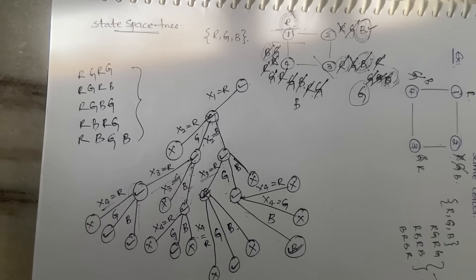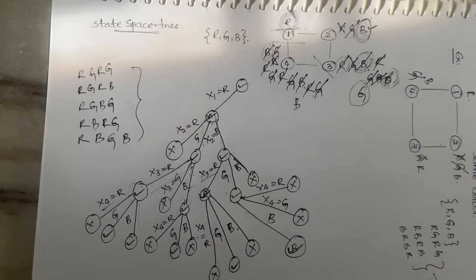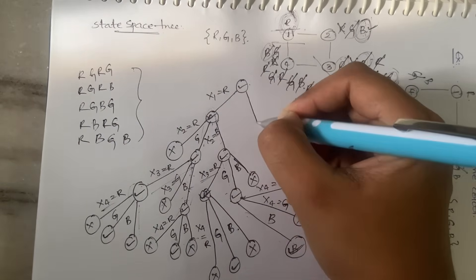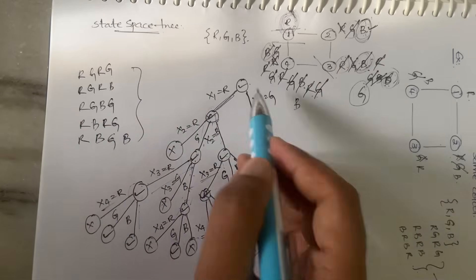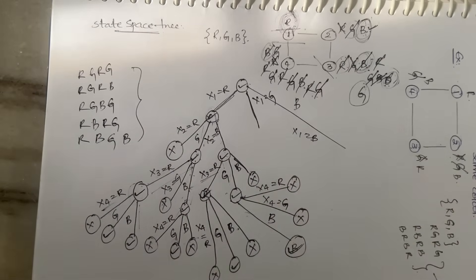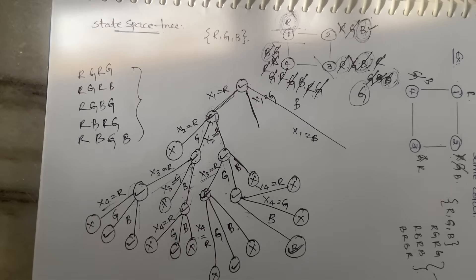So these are the possible solutions. You may get more solutions as well — for example, here we started with x1 = red, but you can also start with x1 = green or x1 = blue and generate more state space trees, giving multiple additional solutions. As stated from the first backtracking video, multiple solutions are possible — the same applies here. That's all about this video. Thanks for watching. If you have any doubts, let me know in the comment section.